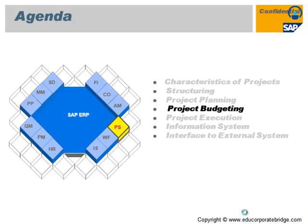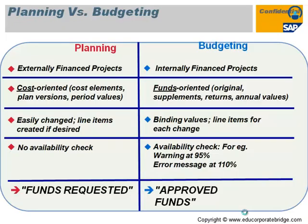The next topic is project budgeting, showing the typical planning versus budgeting in SAP Project System. Planning is done for externally financed projects — you plan your cost across the project on a WBS. Budgeting is for internally financed projects, representing fund allocation. Planning involves procuring costs for materials, services, and overheads, while budgeting controls cost across the fund allocation.